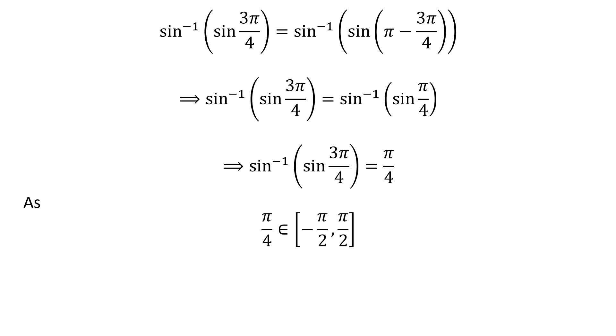So, application of properties of inverse function gives us inverse of sine of sine of 3 times pi upon 4 is equal to pi upon 4, as pi upon 4 belongs to the closed interval of minus half of pi and half of pi.